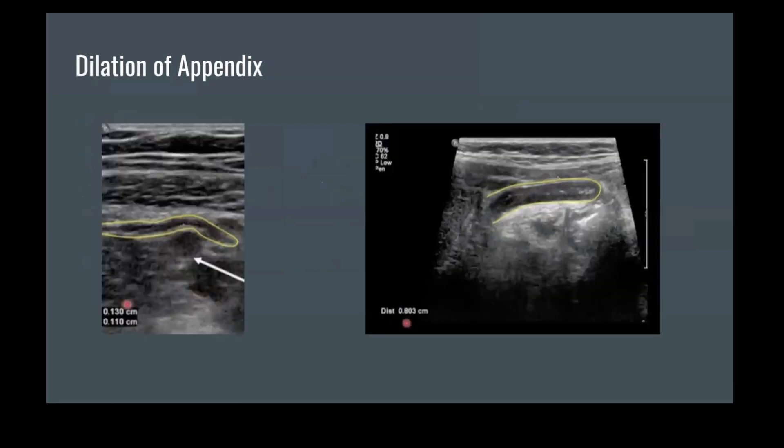Here we have two images of an appendix. On the left side, we have a longitudinal image of a normal appendix versus, on the right side, an inflamed appendix. As you can see, the latter has a significantly greater diameter.